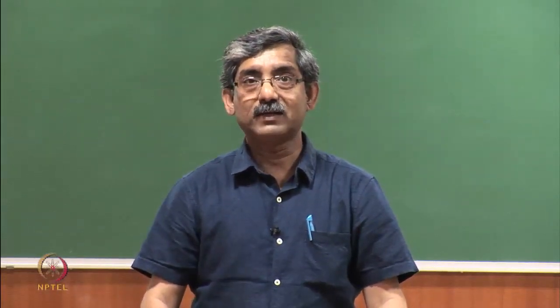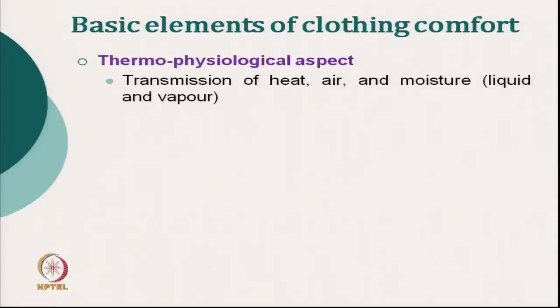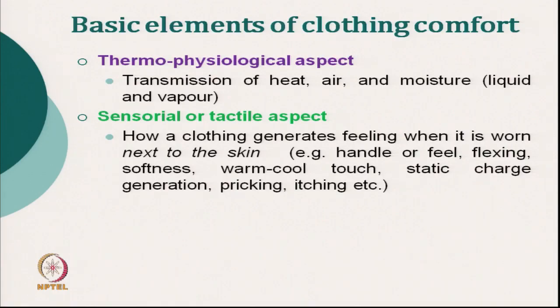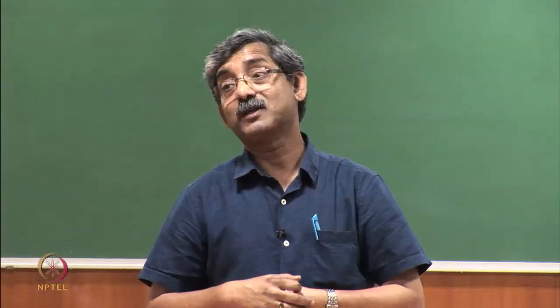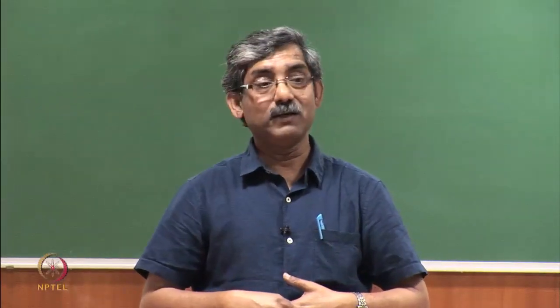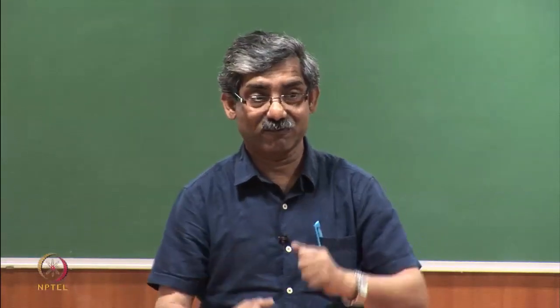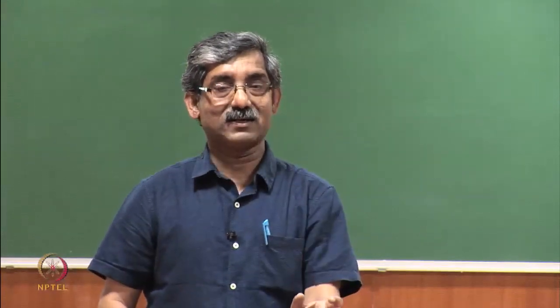The basic elements of clothing comfort are: first, the thermophysiological aspect — transmission of heat, air, moisture in liquid form as sweat, or in vapor form, from the body to the environment. Second is the sensorial or tactile aspect. A person may feel comfortable in terms of transmission for a particular fabric, but may not feel comfortable due to tactile sensation — if it is rough, harsh, not flexible, or not soft.